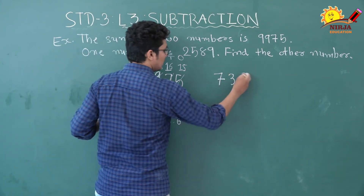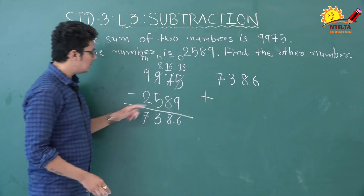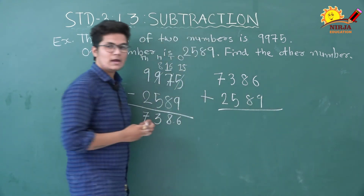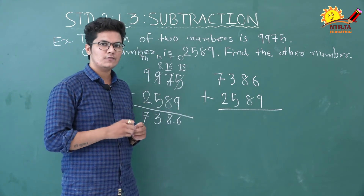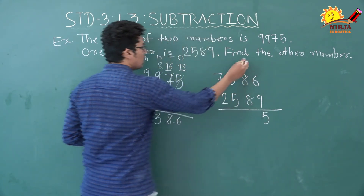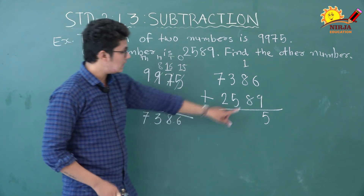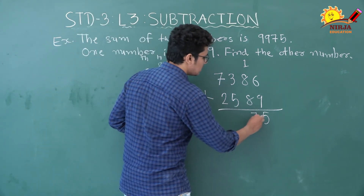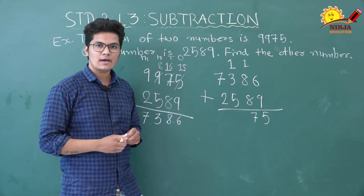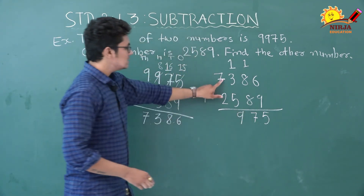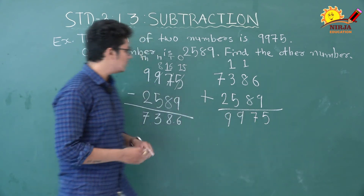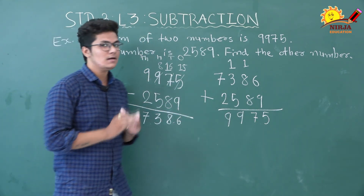We will add 7386 and the smaller number 2589. Starting from ones: 6 plus 9 is 15, write 5 and carry 1. 1 plus 8 is 9, then 9 plus 8 is 17, write 7 and carry 1. 1 plus 3 is 4, then 4 plus 5 is 9. Finally 7 plus 2 is 9. So the sum is 9975, which is the same as the total sum given. Our answer is correct!